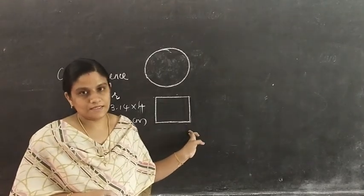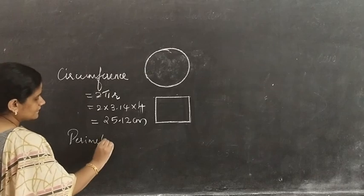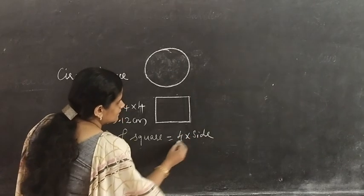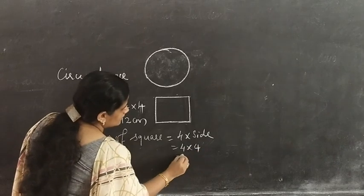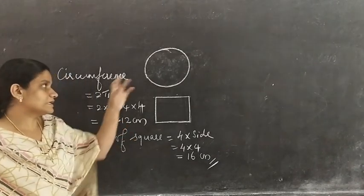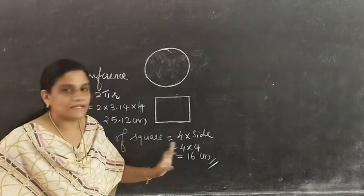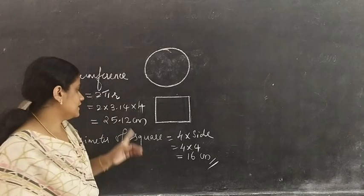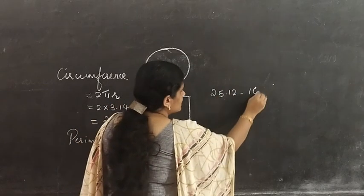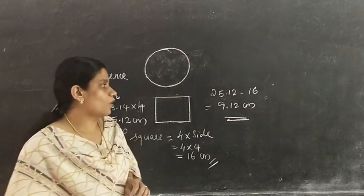Now for the perimeter of the square: each side is equal to 4 cm. Perimeter of square equals 4 into side, that is 4 into 4, which equals 16 cm. The circle has more perimeter. So how much cord is left? We subtract: 25.12 minus 16 gives you 9.12 cm. Therefore, 9.12 cm of cord is left.